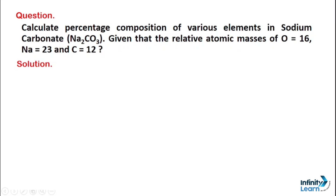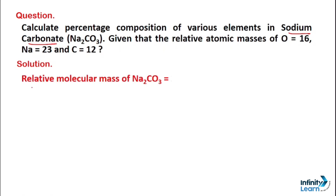Here we are discussing sodium carbonate, whose formula is Na₂CO₃. As you can see, there are three elements — sodium, carbon, and oxygen — whose percentage composition we need to calculate. For that, we first need to find the relative molecular mass of sodium carbonate.